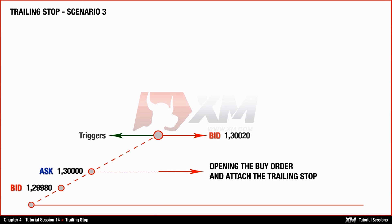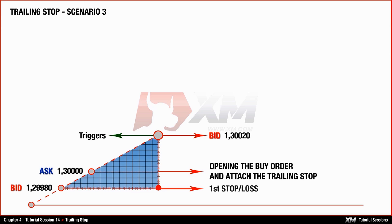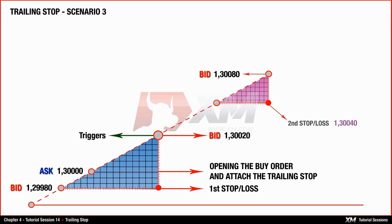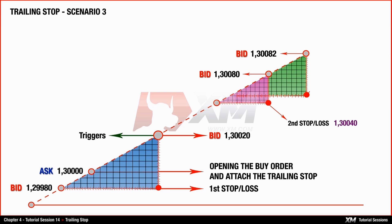Supposing that the market continues moving in your favour, the trailing stop will follow that profit and update the stop loss with a new value according to the previously set distance, which in our example is 40 points, equal to 4 pips. When the price reaches 1.30080, the trailing stop will update your stop loss position at the value of 1.30040. If the price keeps rising to 1.30082, the stop loss value will follow up and update to 1.30042. This will continue as long as the market moves in your favour, or until it moves against your profit and reaches the current stop loss value.